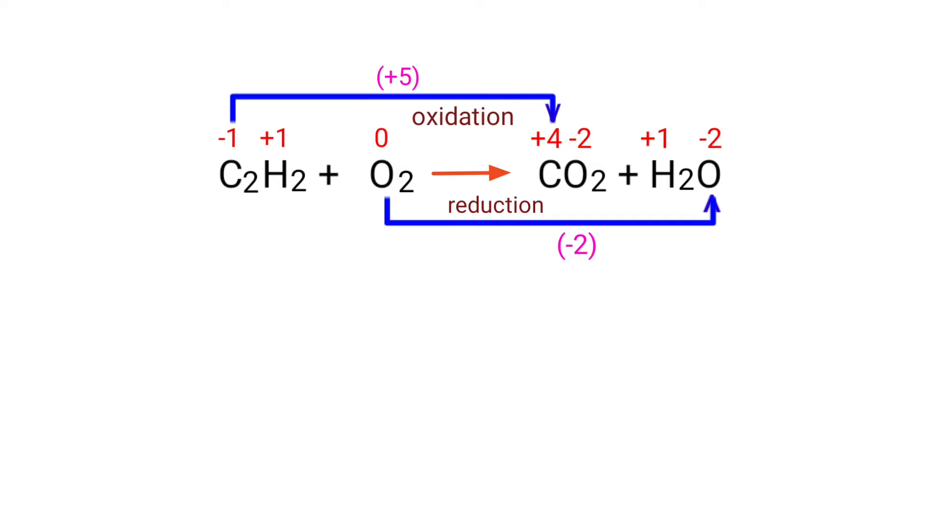In the C2 element, there are 2 Carbon atoms present, so total increase in oxidation number is plus 10. In the O2 element, there are 2 Oxygen atoms present, so total decrease in oxidation number is minus 4.